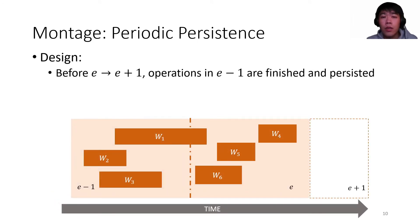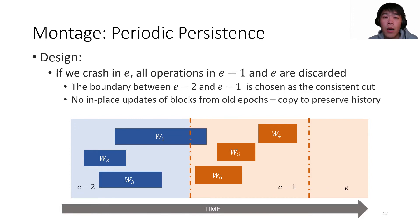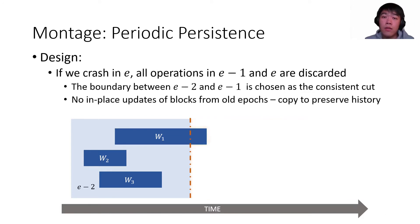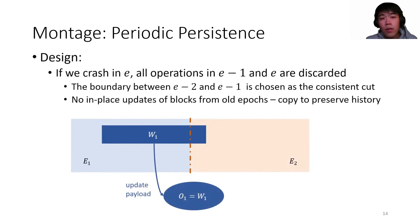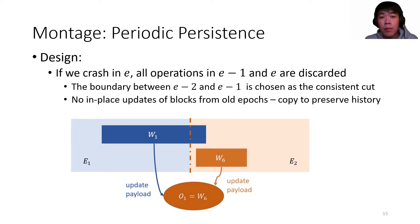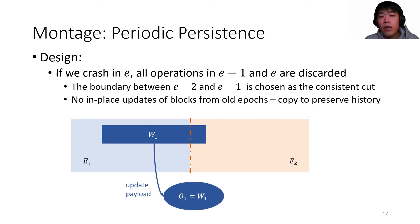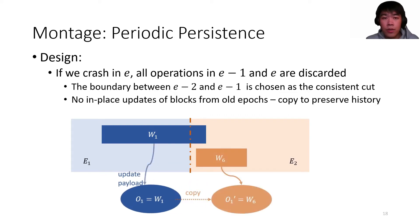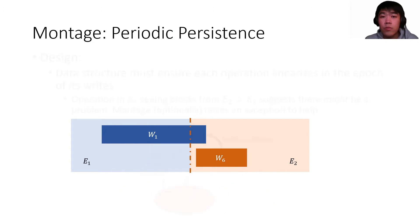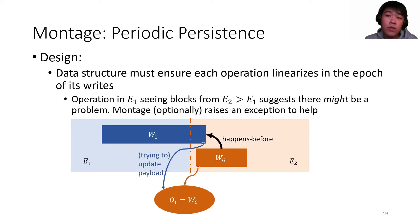Before the epoch boundary from E to E+1, all operations in epoch E-1 are waited to finish and persist. If a crash happens in epoch E, the history will be driven back to the end of epoch E-2; all operations in E-1 and E are discarded. Consequently, we cannot trivially overwrite persistent objects or payloads. If a payload was last updated in previous epochs, it cannot be in-place updated in a new epoch because the history of those blocks in old epochs needs to be preserved in case the new epoch is discarded. Instead, we make copies of those blocks and update the new copies.